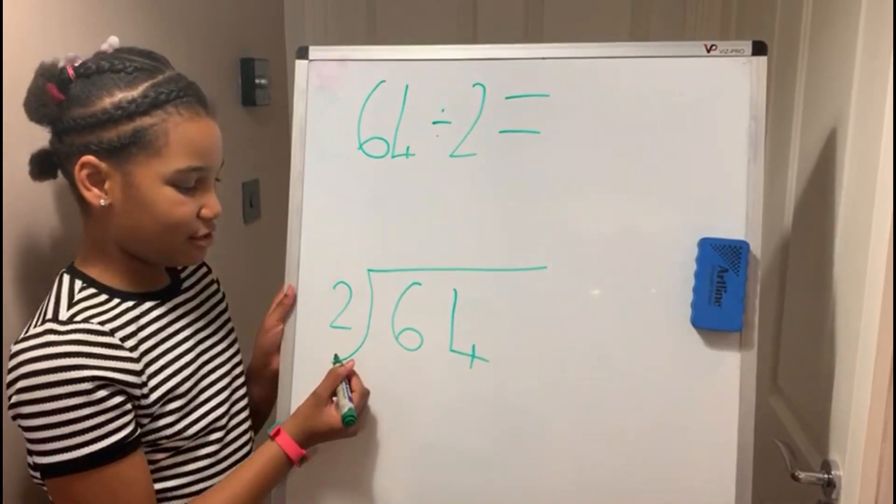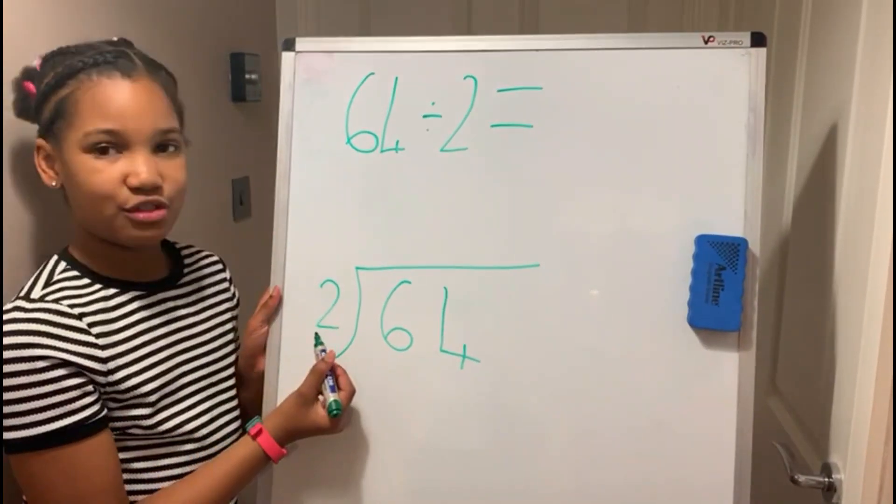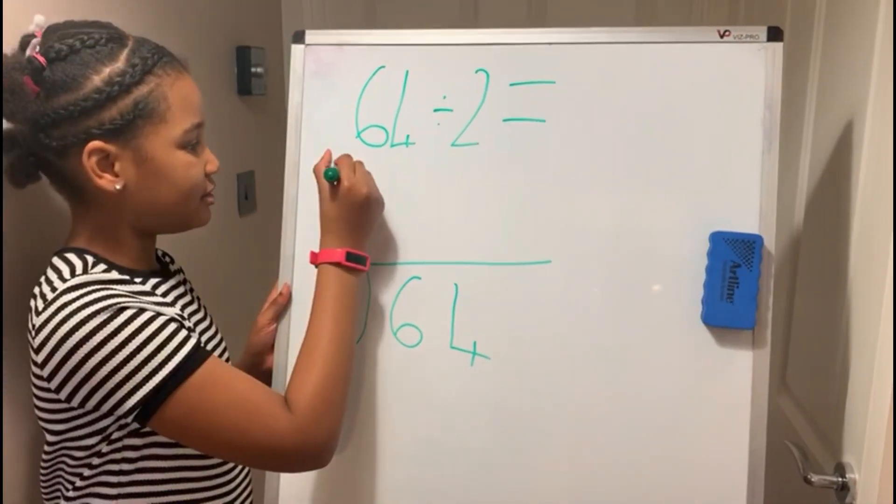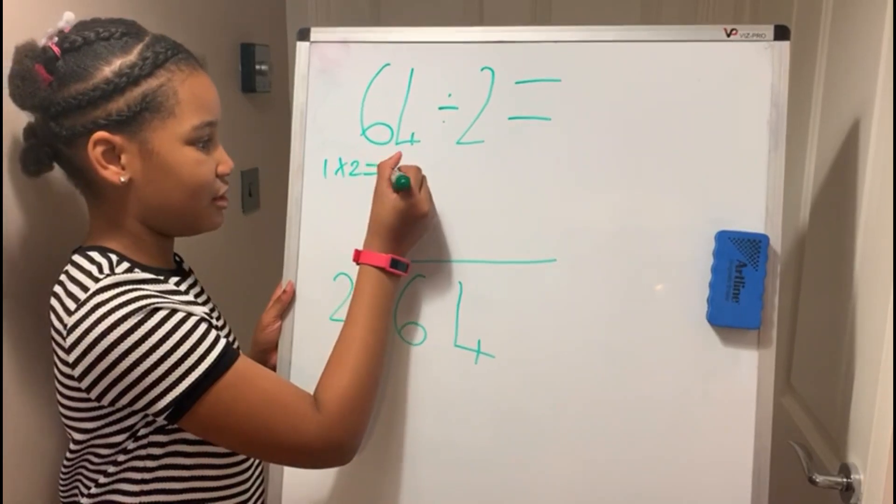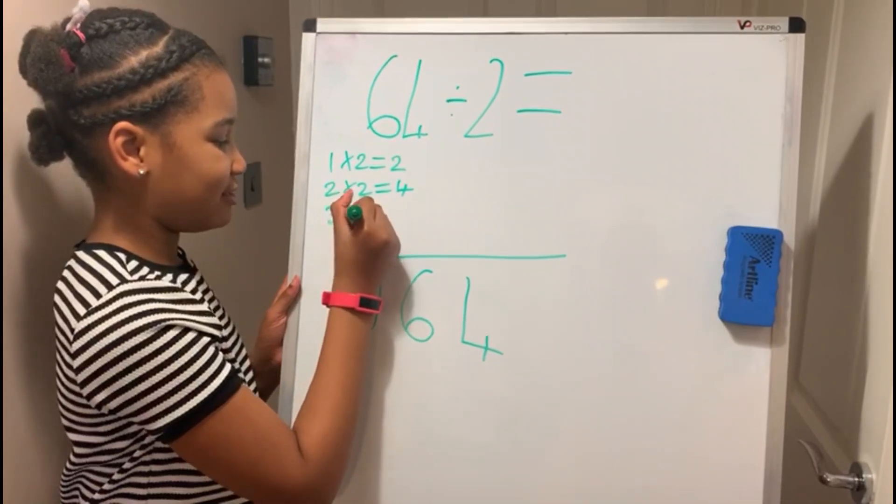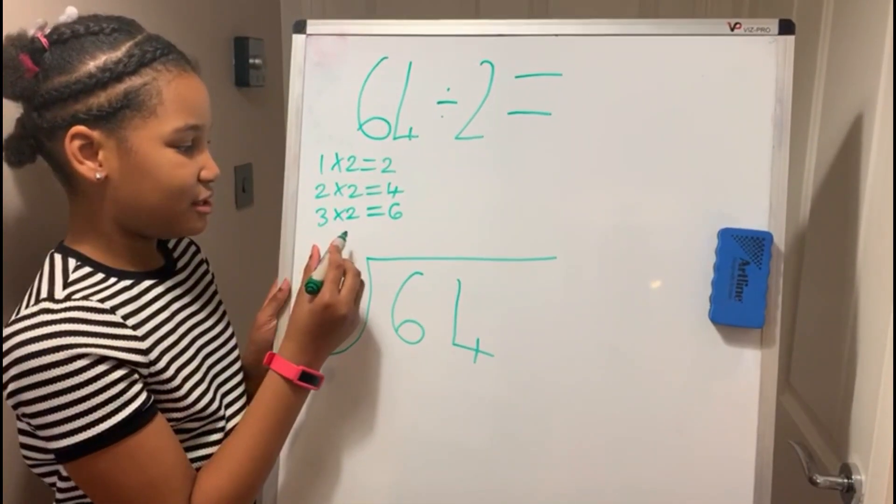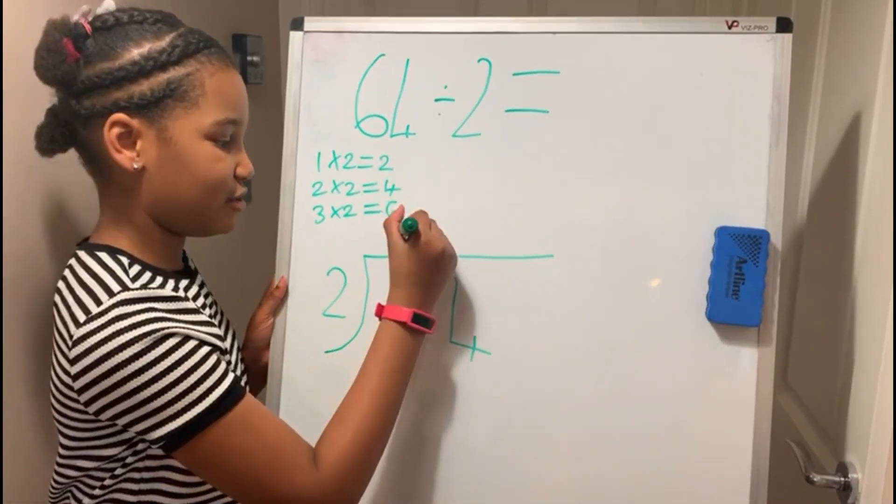Now, how many 2's go into 6? To find out you need to use your 2 times tables. 1 times 2 equals 2, 2 times 2 equals 4, and 3 times 2 equals 6. So the answer is 3.